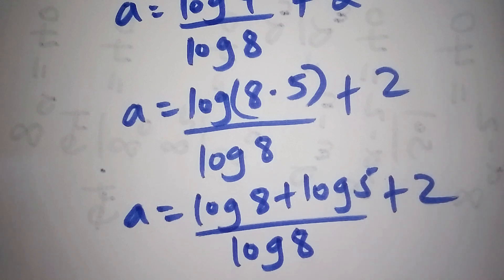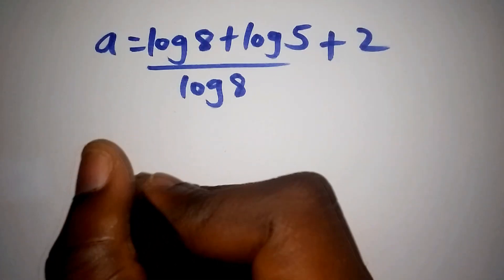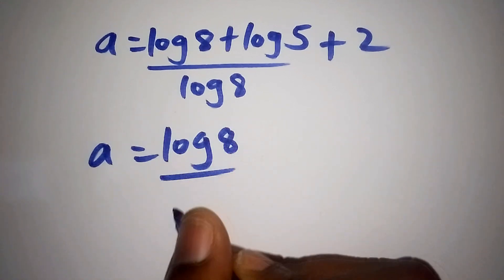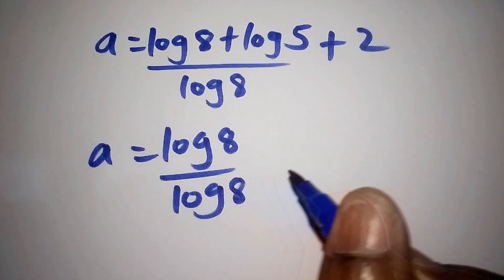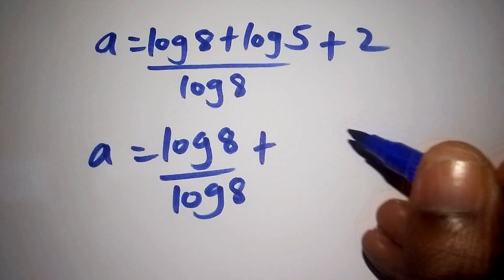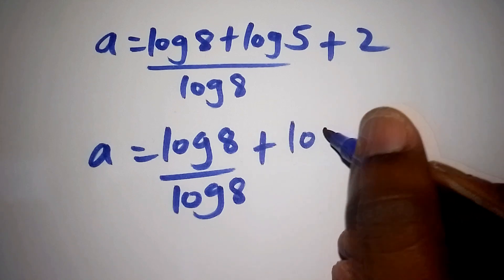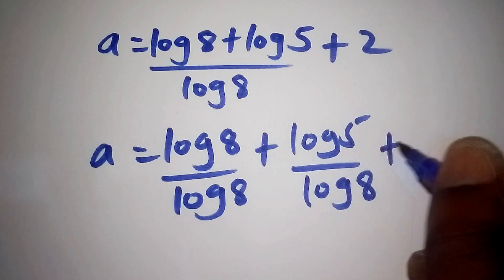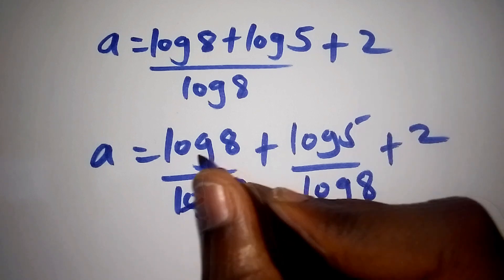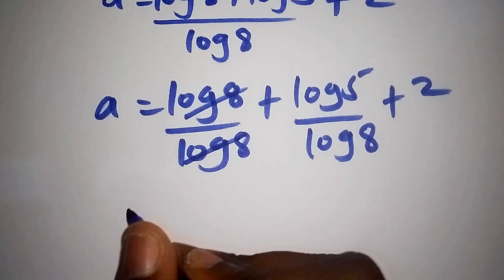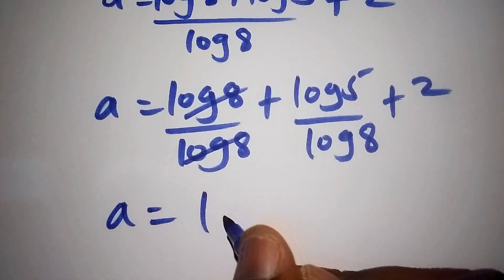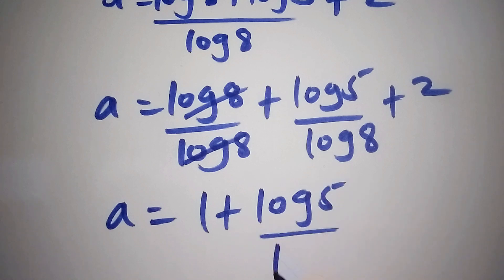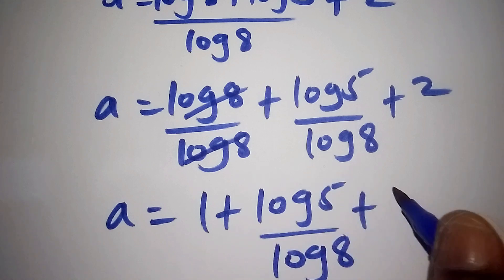So our value for A equals log 8 over log 8, plus log 5 over log 8, plus 2. Log 8 and log 8 cancel, so we now have A equals 1, plus log 5 over log 8, plus 2.